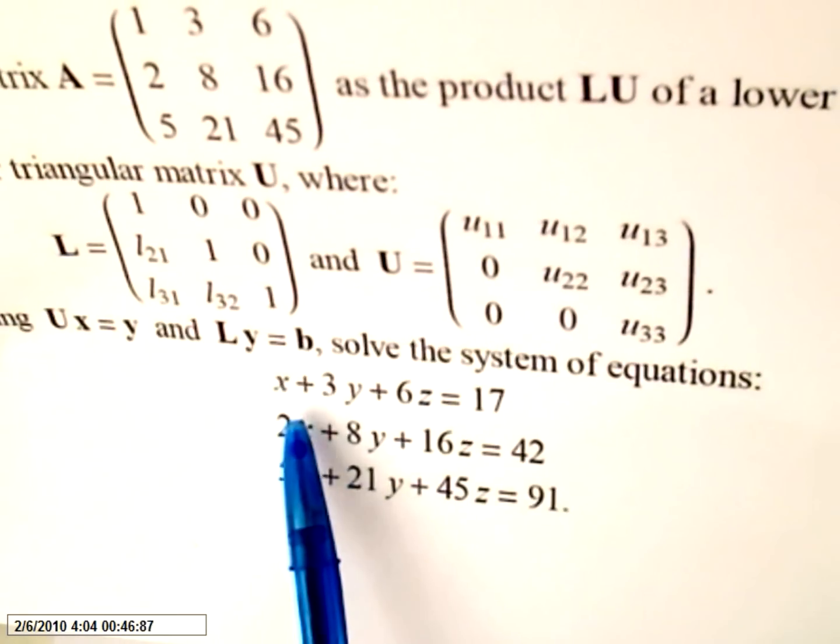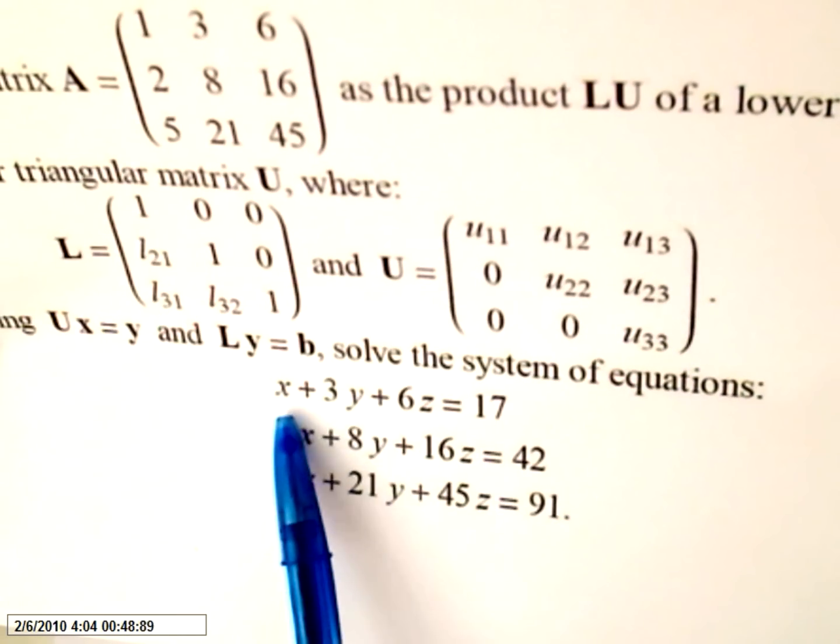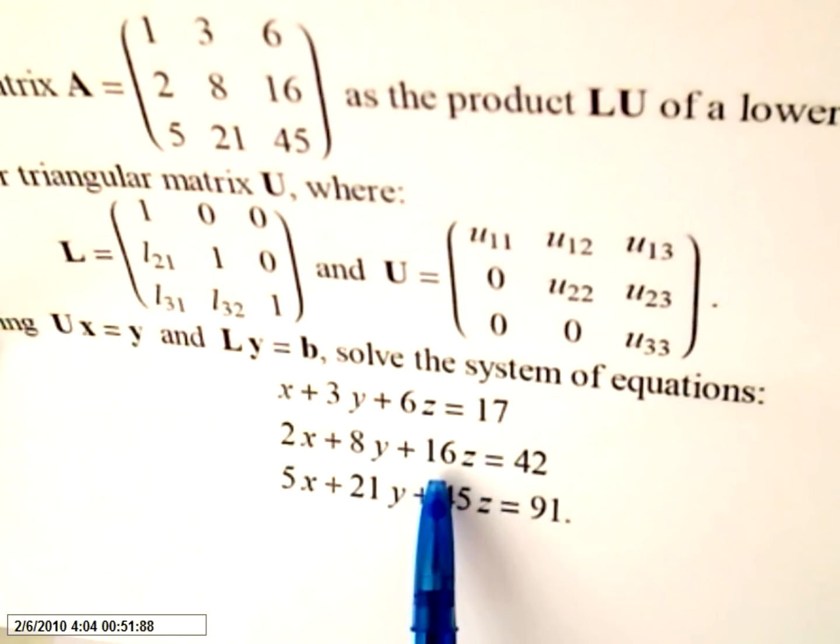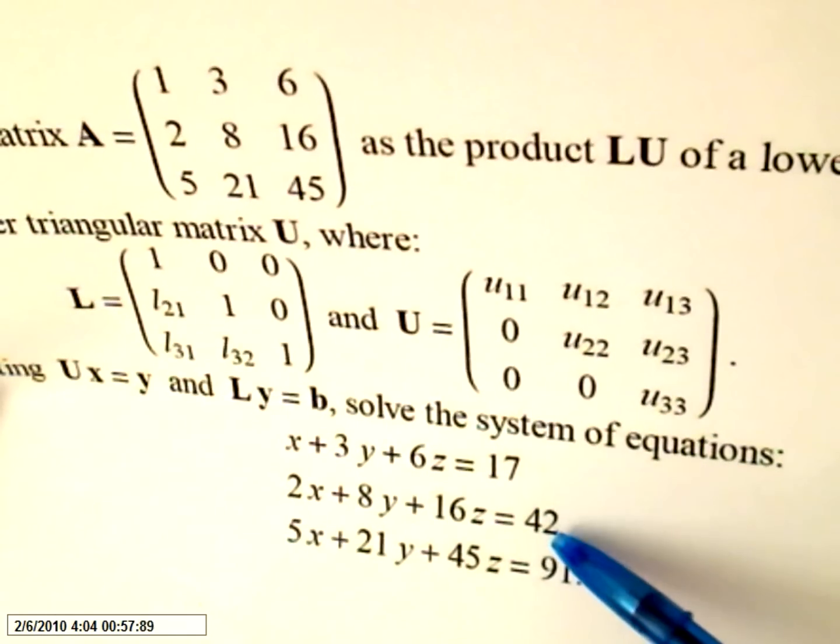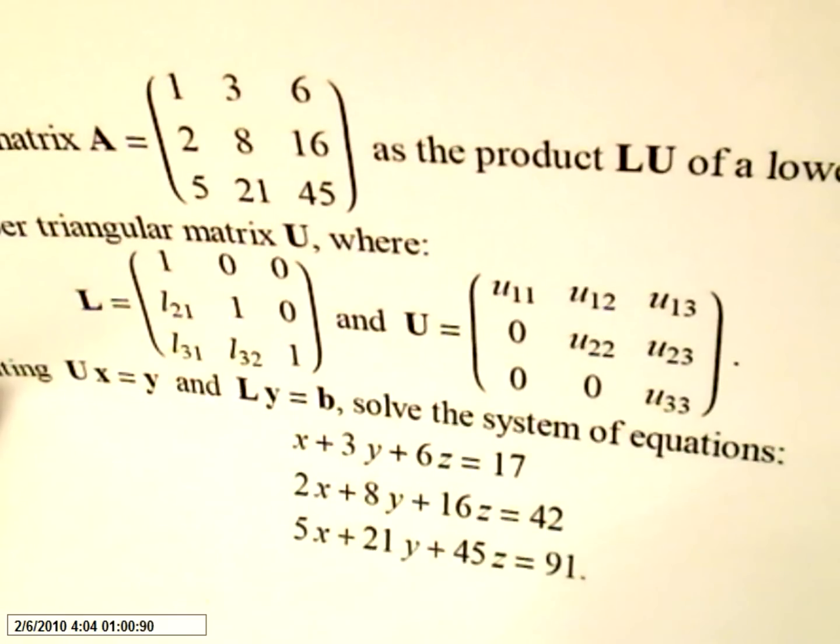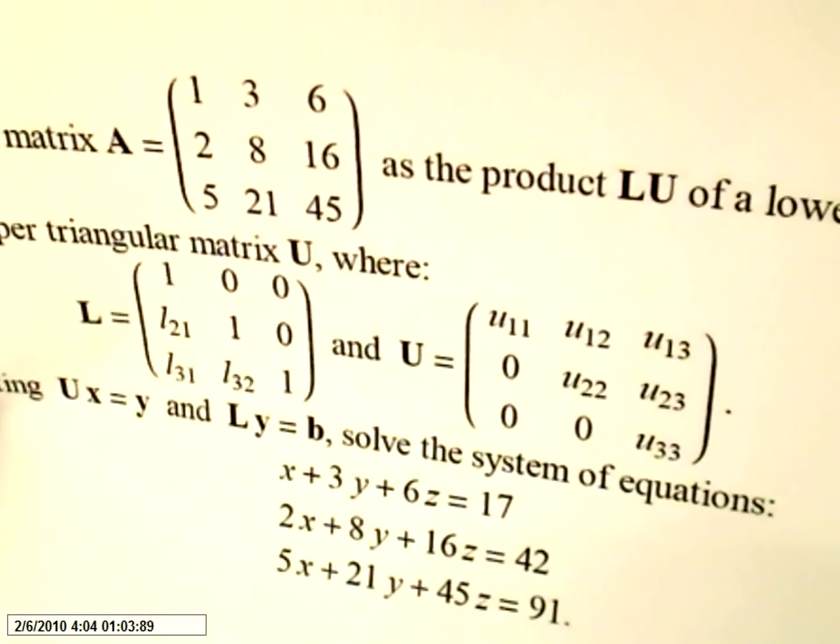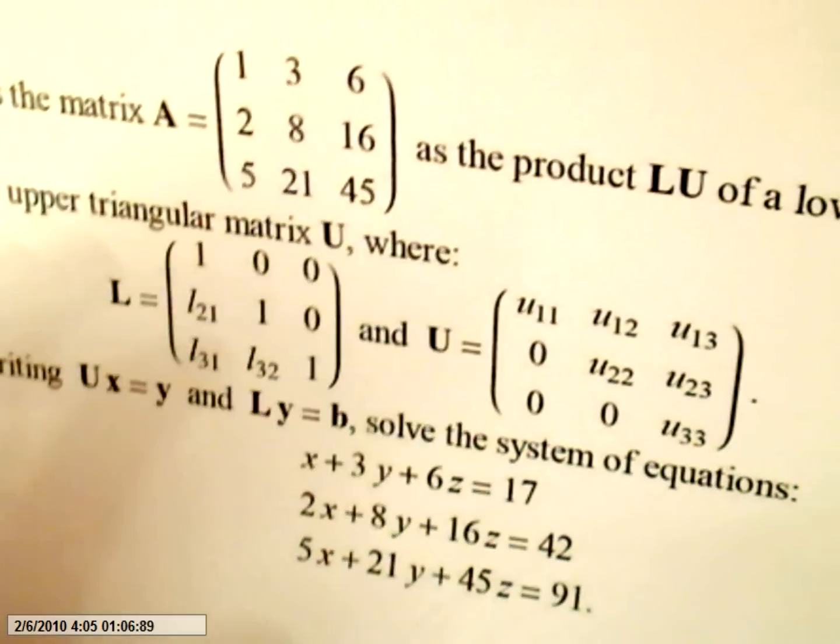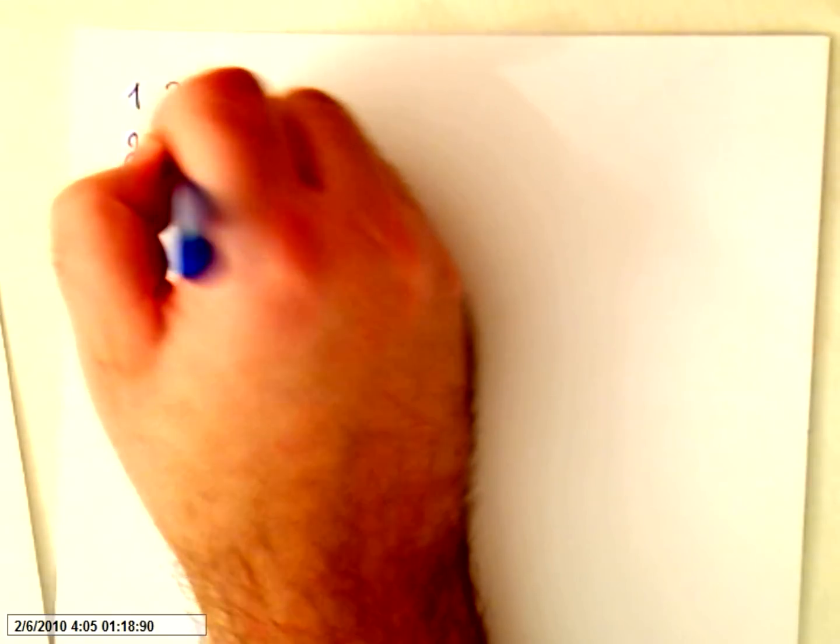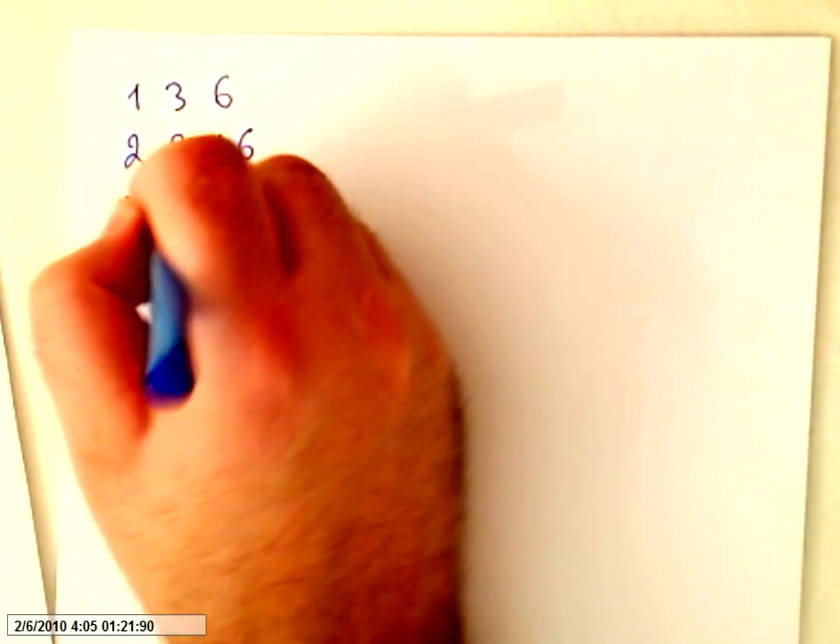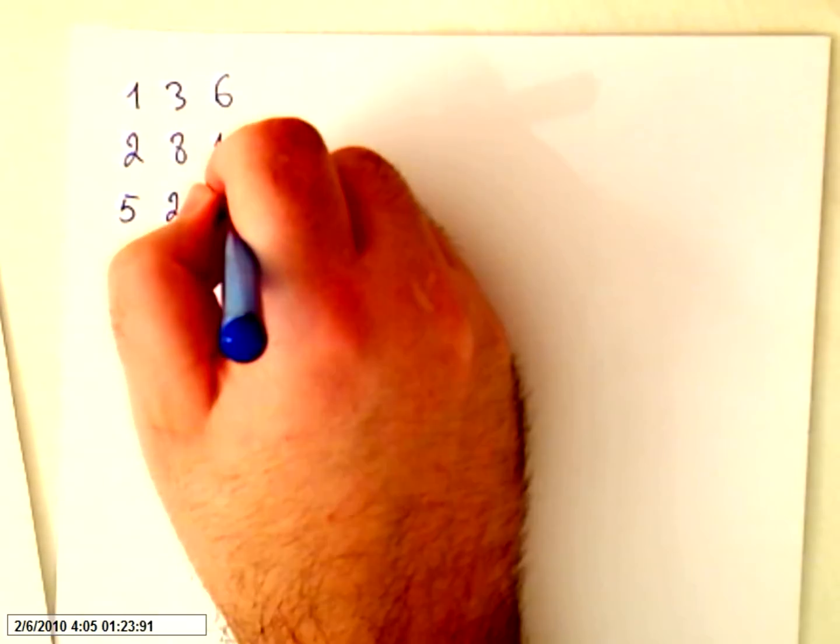First we are going to take these matrices. The matrix is here, 1, 3, 6, 2, 8, 16, and then with an independent value 17, 42, 91. We are going to put this in a matrix form. So it will be 1, 3, 6, 2, 8, 16, 5, 21, 45.